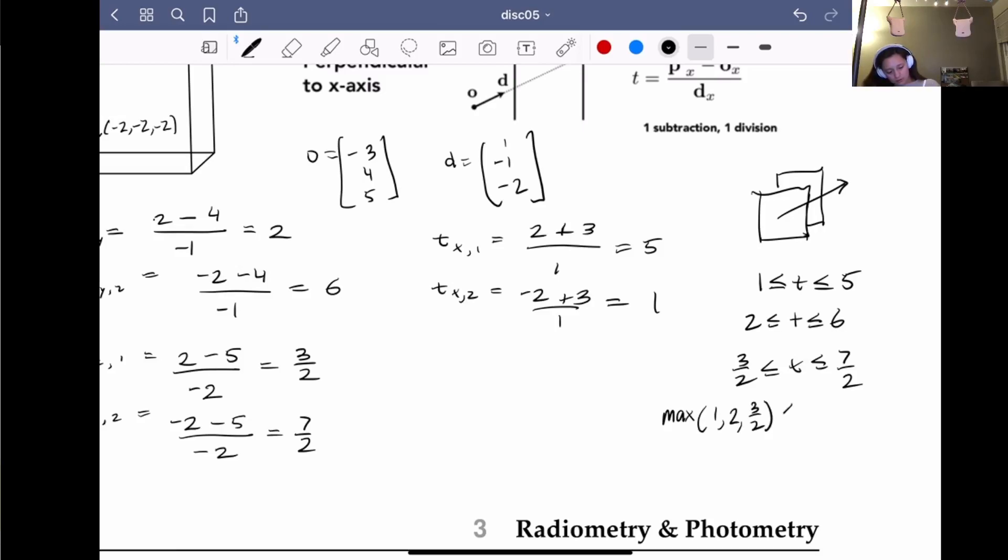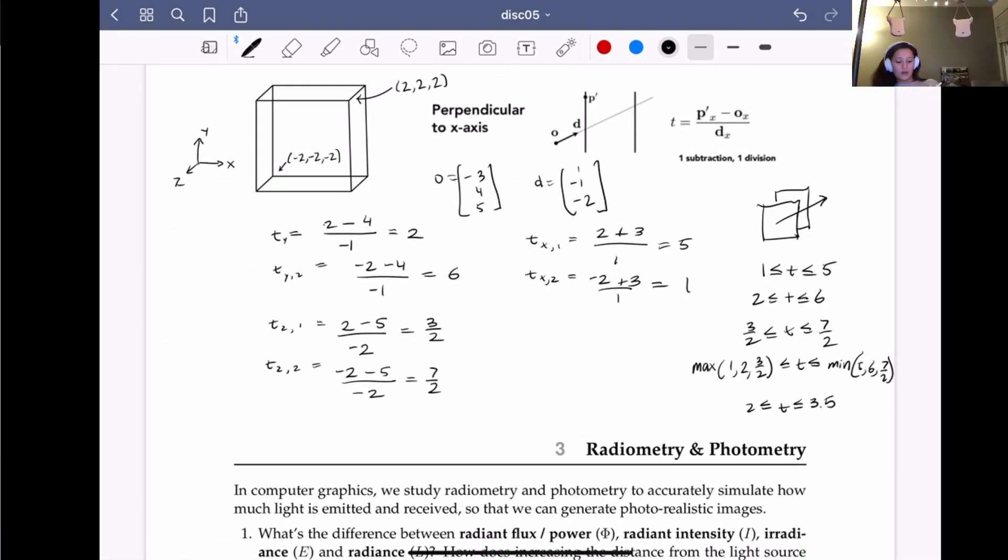Okay, so now if we just kind of combine these intervals, we'll end up taking the max value of these three here. So this will be max of 1, 2, 3 over 2. And then we'll take the min of our upper bounds. So then we'll have min, one second, 5, 6, 7 over 2. And so that'll give us 2 and 3.5. So our entrance, our entry point, will be at time where t equals 2, and our exit is where t equals 3.5.